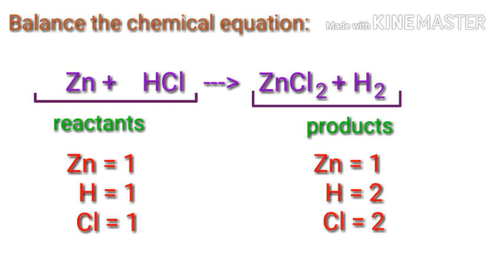The number of atoms is not balanced on both sides. To balance the chemical equation, we need to make use of coefficients.